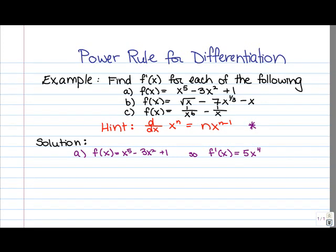For the next term, we have minus 3x squared. So the 2 is going to come down and multiply the negative 3, so we'll end up with negative 6. And we're going to reduce the power by 1. So we had x squared, we'll end up with just x. And lastly, when you differentiate 1, you get 0.